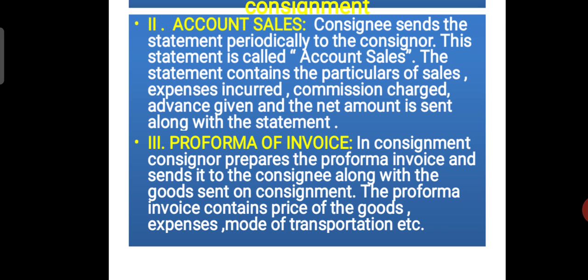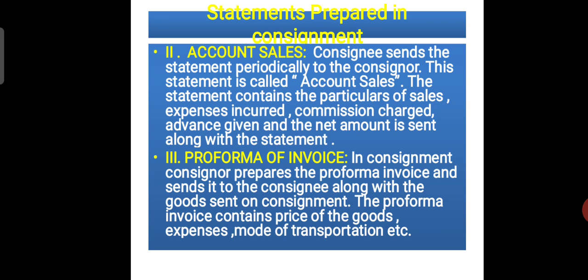So these are the important terms we use in consignment business while recording accounting transactions in consignment accounts. What we learnt from this video: first, Consignor; second, Consignee; third, Goods Sent on Consignment; types of commissions — ordinary commission, del credere commission, overriding commission; and the statements prepared in consignment business — Account Sales and Pro Forma Invoice. One question will definitely come in the annual examination for two marks. I hope you understood all the important terms. Thank you for watching this video.